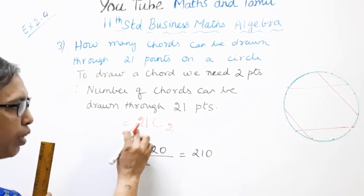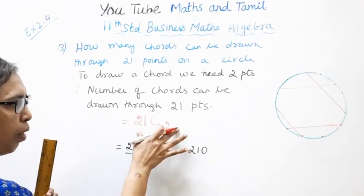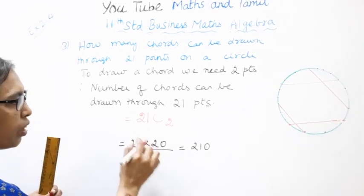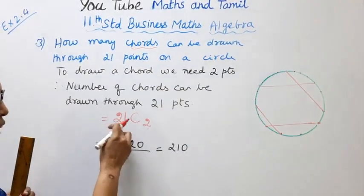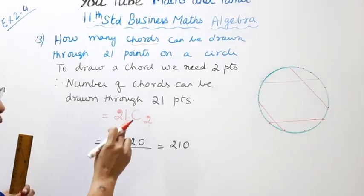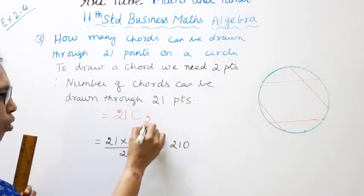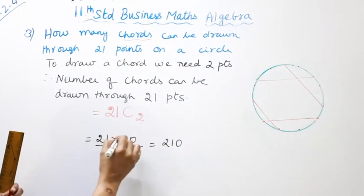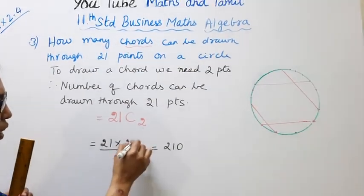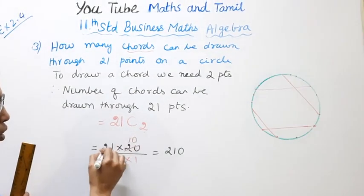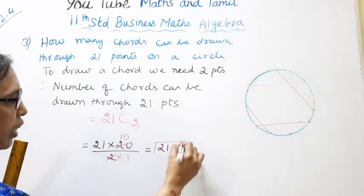To draw a chord you need two points from the 21 points. Using the combination formula, 21C2 equals 21 times 20 divided by 2, which equals 21 times 10, equals 210 chords.